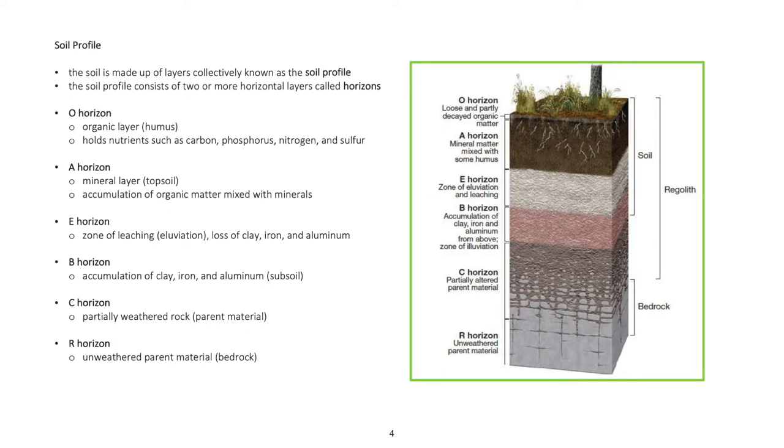O-horizon: organic layer, humus, holds nutrients such as carbon, phosphorus, nitrogen, and sulfur. A-horizon: mineral layer, topsoil, accumulation of organic matter mixed with minerals.